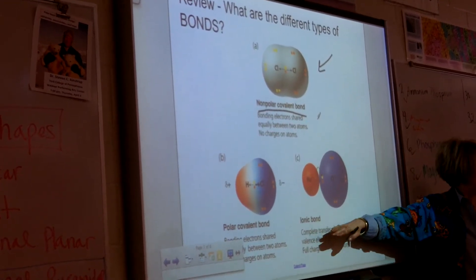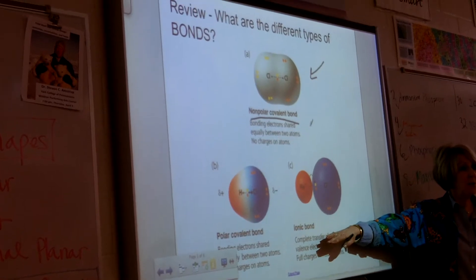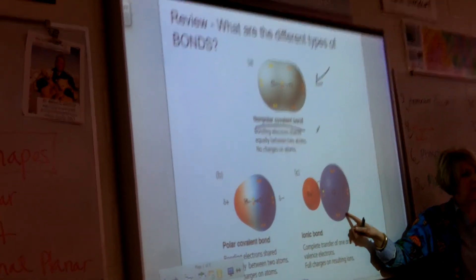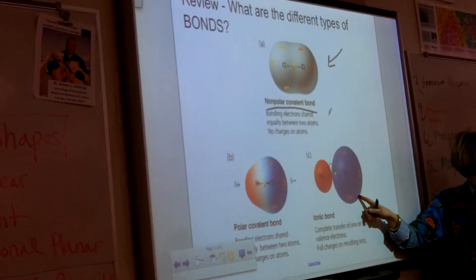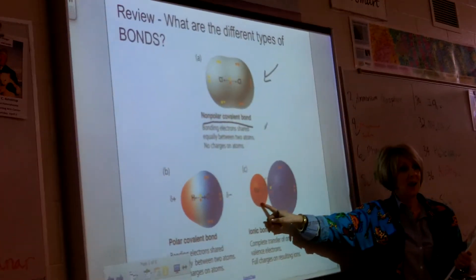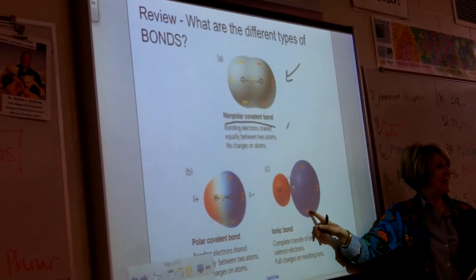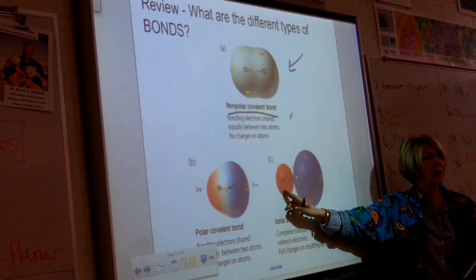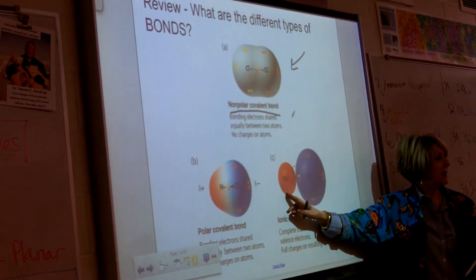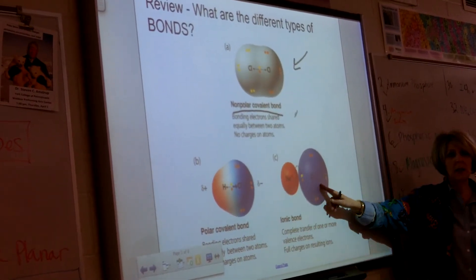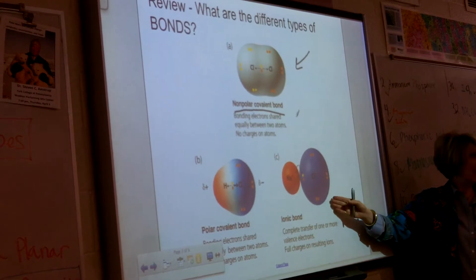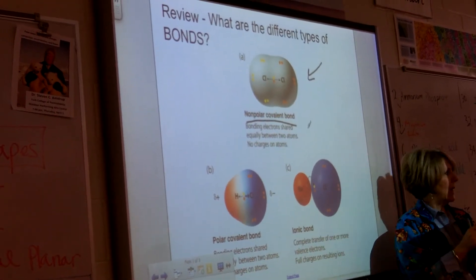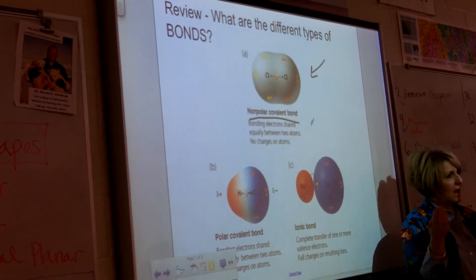Do we have sharing of electrons? No, we do not. We have a situation where this guy must be very much more electronegative than this guy. Chlorine is very electronegative. Sodium is not. And so it's going to steal an electron and become a negative anion. Sodium becomes positive, and now we have a bond. That's an ionic bond.